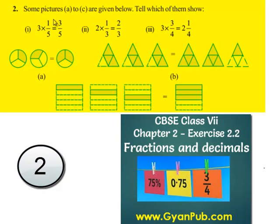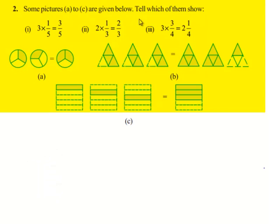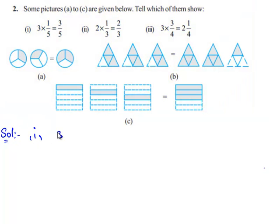Let us move on to the next question. Some pictures A to C are given below. Tell which of them show the following fractions. There are 3 drawings given in A, B, and C. Let us first consider the first fraction given, that is 3 times of 1 by 5, which is equal to 3 by 5.